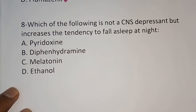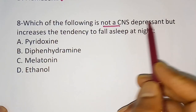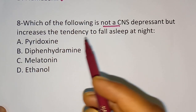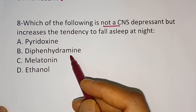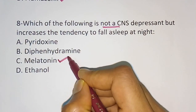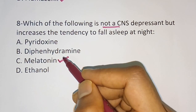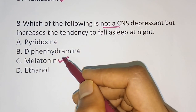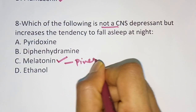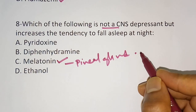Question number 8: which of the following is not a CNS depressant but increases the tendency to fall asleep at night? Options are: A) pyridoxine (vitamin B6), B) diphenhydramine (antihistamine), C) melatonin, D) ethanol. The correct answer is melatonin, option C. Melatonin is a hormone secreted from the pineal gland, and it is normally secreted at night time.